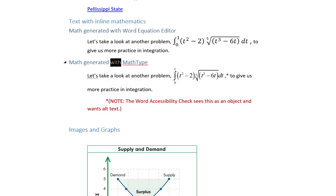Math generated with MathType. Let's take a look at another problem to give us more practice in integration. Note: the Word Accessibility Check sees this as an object and wants alt text. Images and graphs.